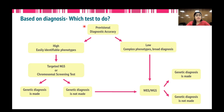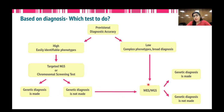Based on diagnosis, one should look at the provisional diagnostic accuracy. If the diagnostic accuracy is high — usually in cases with easily identifiable phenotypes — one can directly go for targeted NGS or a chromosomal screening test depending on the phenotype. If genetic diagnosis is made, good; if not, one can proceed to WES and WGS-based testing. If diagnostic accuracy is low — where phenotypes are complex and diagnosis can only be made broadly — one can directly go for WES and WGS-based testing. We will discuss why even WES and WGS cannot solve all cases.